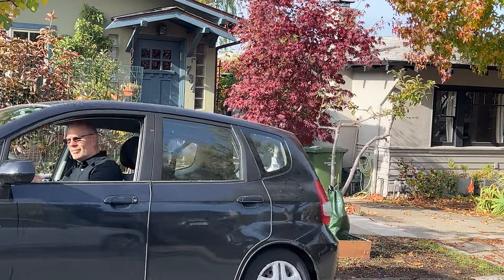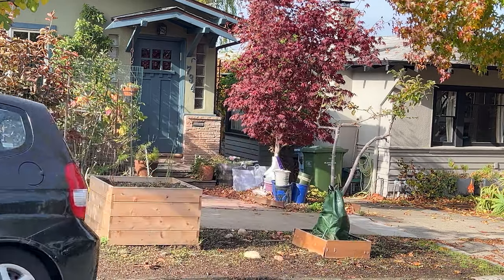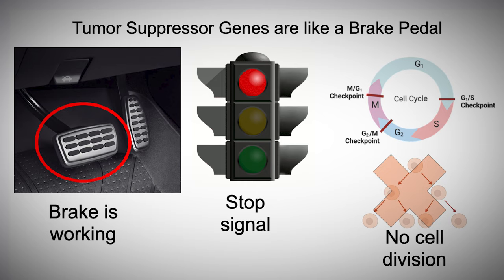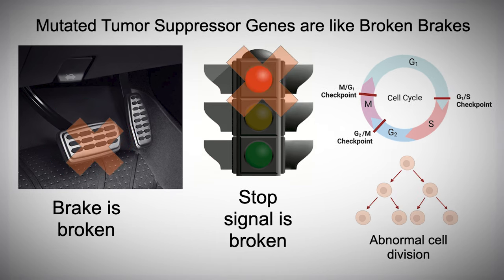The analogy involves cars and driving. When tumor suppressor genes are working, they function like a car's brake pedal. The brake keeps the car from moving forward. Similarly, tumor suppressor genes keep the cell from moving through the cell cycle. When tumor suppressor genes mutate, they no longer produce proteins that prevent cell division, even when cell division shouldn't happen. It's as if a car's brake pedal were broken, so the car can no longer stop.